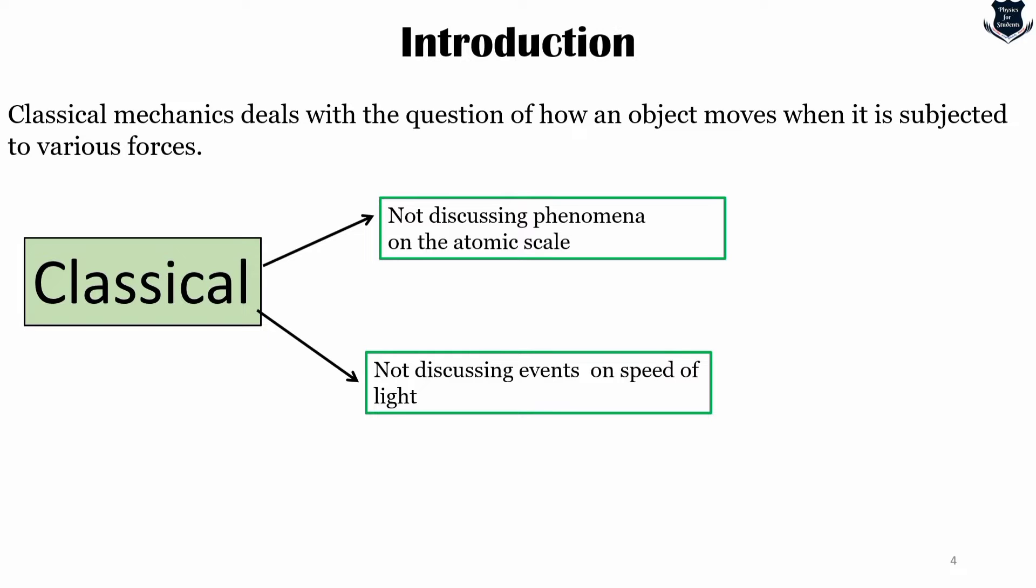The description of atomic phenomenon requires quantum mechanics to be covered and the description of phenomenon at high velocities requires Einstein's theory of relativity, which I have got separate videos for. Both quantum mechanics and relativity were invented in the 20th century. The laws of classical mechanics were stated by Sir Isaac Newton in around 1687.